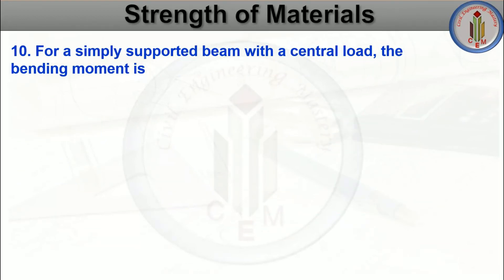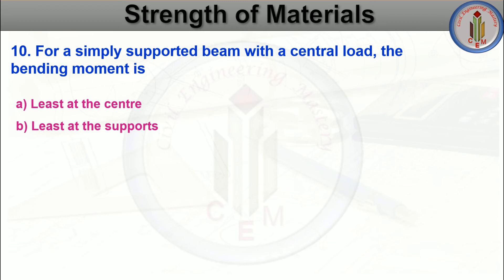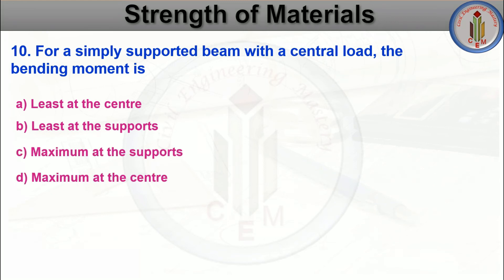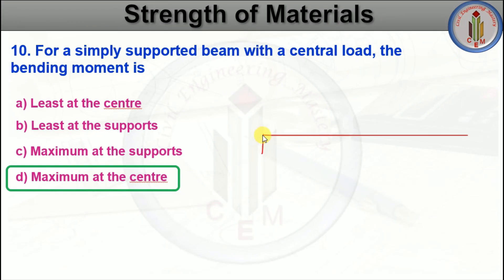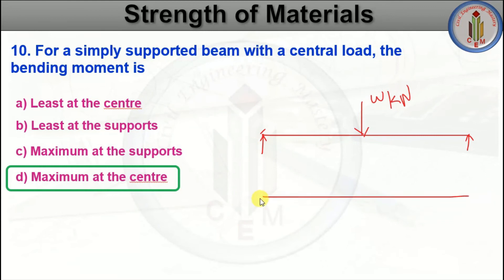For a simply supported beam with a central load, the bending moment is — least at center, least at support, maximum at support, or maximum at center. The answer is maximum at the center. Consider a simply supported beam with concentrated load W acting at the center — the bending moment diagram shows the maximum bending moment occurs at the center.